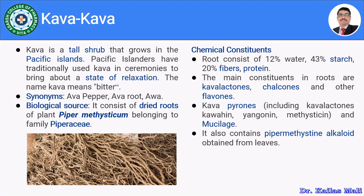Generally, we use the roots of kawakawa for medicinal purposes. The drinks prepared using kawakawa are used for relaxation by Pacific Islanders. The synonyms of kawakawa are awa, pepper, awa root, or awa. The biological source: kawakawa consists of the dried roots of the plant Piper methysticum, belonging to the family Piperaceae.